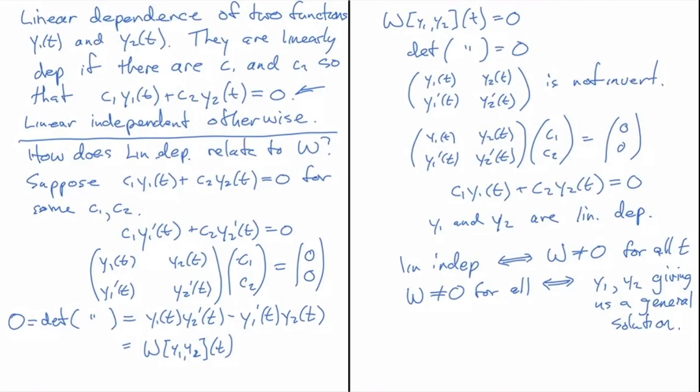So we now have that linear independence is synonymous with the Wronskian not equaling zero for all t, and the Wronskian not equaling zero for all t is synonymous with y1 and y2 giving us a general solution. In another video, I'll do examples showing how to determine the linear dependence of y1 and y2.